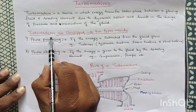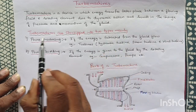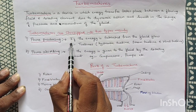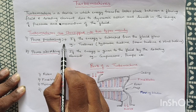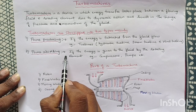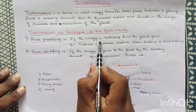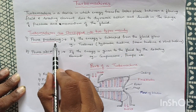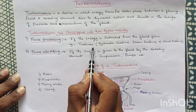These Turbomachines are classified mainly into two types. One is the Power-Producing Turbomachine, also called the Power-Generating Turbomachine, and another is the Power-Absorbing Turbomachine. If the energy is extracted from the fluid flow, then it is called a Power-Producing Turbomachine. For example, Turbines.